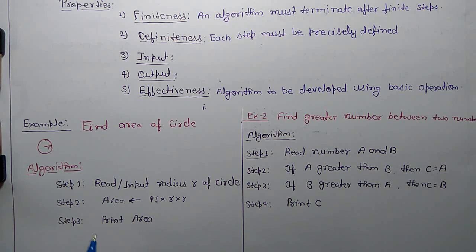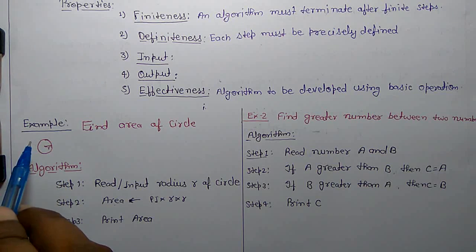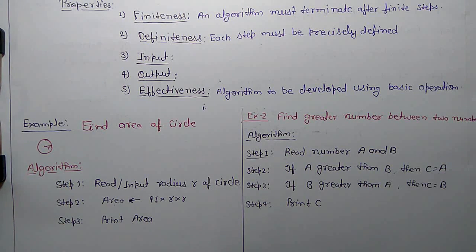So after following these three steps, you are able to calculate area of any circle. So this is an algorithm, this is a finite step, so it holds first property.